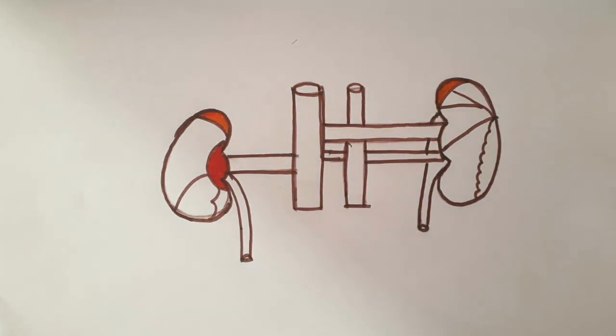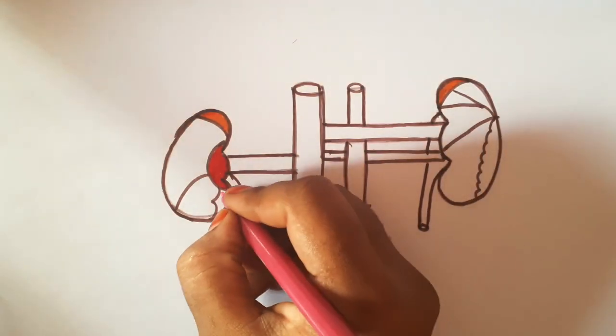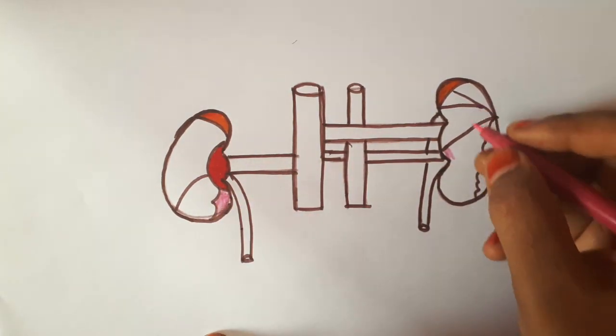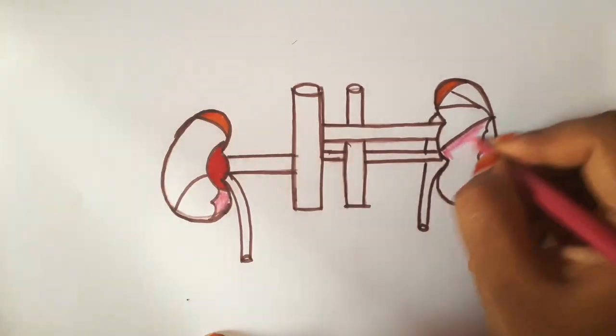On its medial border, above we will see the attachment to the suprarenal gland. Below it is attachment to the hilum on its medial border.